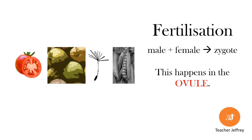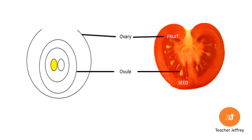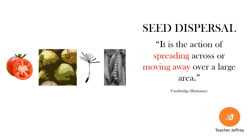In the last video, we studied fertilization in plants. We learned that fertilization occurs when the male and female gametes fuse to form a zygote, which happens in the ovule. The zygote undergoes cell division to form an embryo. The ovule develops to become a seed, and the ovary that contains the ovule develops to become a fruit.